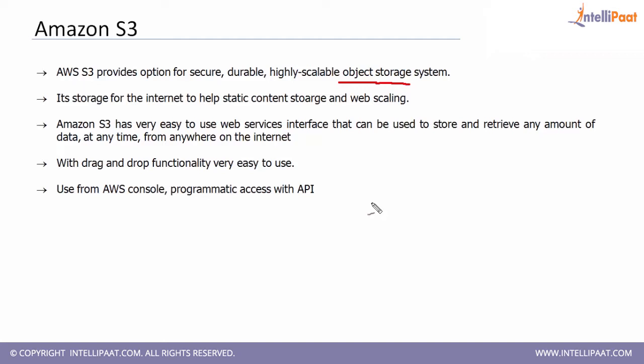Amazon S3 has a very easy-to-use interface, but the most important part is that it gives you storage for the internet. S3 is considered storage for the internet. Unlike Google Drive or other cloud storage systems, S3 is storage over the internet for static content. Static content means not databases — it's files like JPEG, video, BMP, MP4, Word, PPT, Excel — any kind of file. You can upload those and access them from anywhere in the world using easy-to-use APIs, even programmatically.